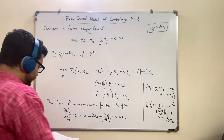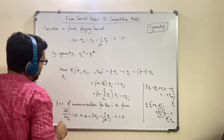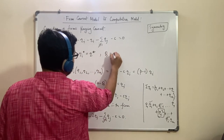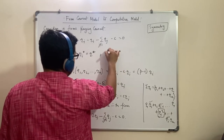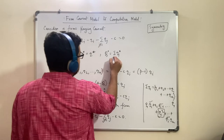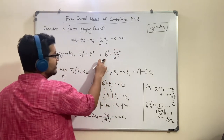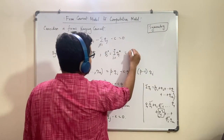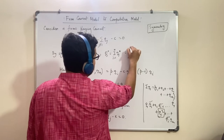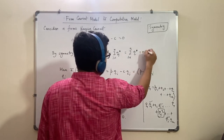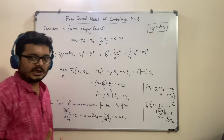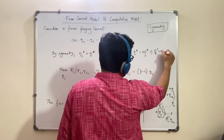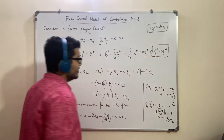So qi star equals q star. Capital Q star is the sum of all qi star at the optimal solution. If every qi star equals q star at optimum, then we are looking at n firms each producing q star, so capital Q star equals n times q star. This is obtained by symmetry, and we are going to use it with our reaction function of the i-th firm to reduce calculation.